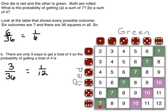You can see that 6 squares have a total of 7. Now there are 36 squares in all. So we have 6 out of 36, or a 1 in 6 chance of rolling a 7, a sum of 7.